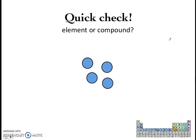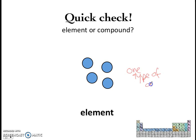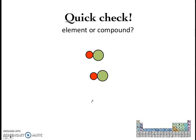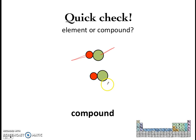Now before we look at mixtures, let's have some questions. Look at this diagram — is this an element or a compound? It is an element because there's only one type of atom: balls of one color, one type of particle. Now how about this one? This represents a compound because there's more than one type of atom — we've got the green one, which represents atoms of a certain element, and the red one, which represents atoms of another element, and they are chemically combined, joined together.